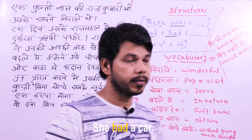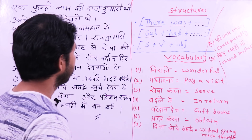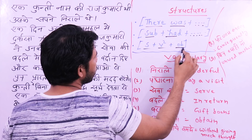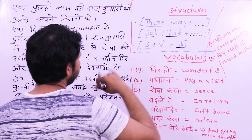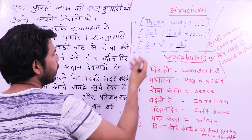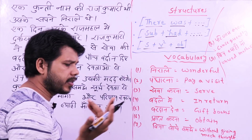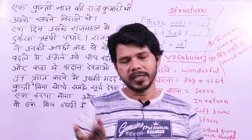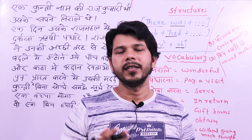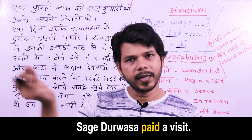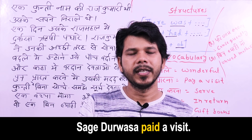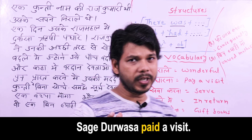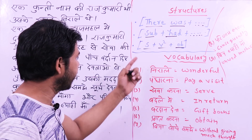After that, the third structure is: subject + verb second form + object. This is past indefinite tense. For example, sage Durvasa came — or paid a visit. You have to show all of this in past tense as well. So the structures are just these three. There are many vocabulary words though.